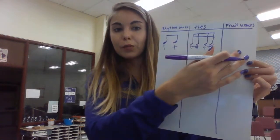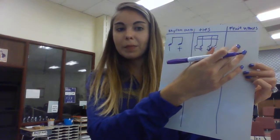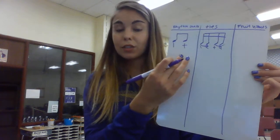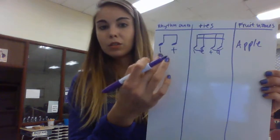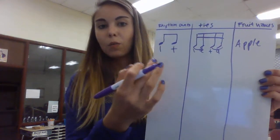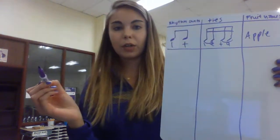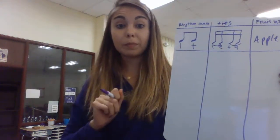Now we need a fruit name that matches the syllables and sound of 'one and' so you can remember how the rhythm sounds. I chose 'apple' — two syllables, two sounds. One and — apple. Then draw a line to separate it for our next rhythm.